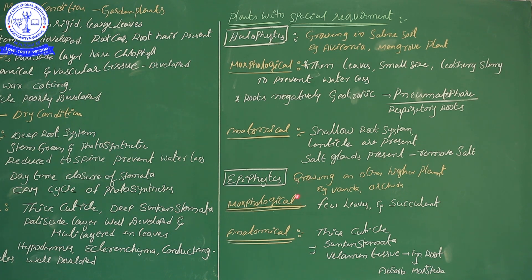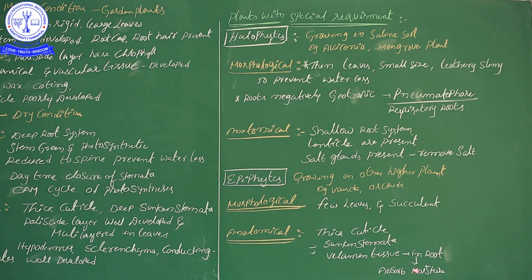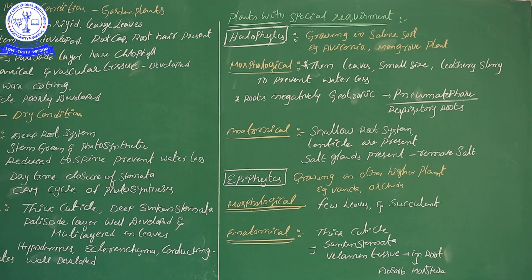Epiphytic plants show morphological adaptations — very few leaves in succulent condition — and anatomical adaptations — thick cuticle, sunken stomatas, and velamine tissue in roots for moisture absorption. Halophytes have respiratory roots for respiration. In this video, we discussed several plant varieties and how they are adapted to their climatic and ecological conditions.